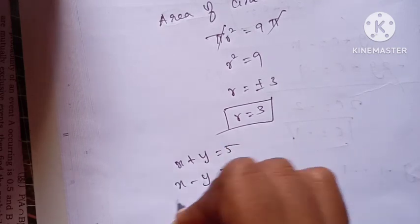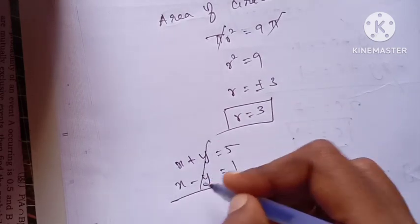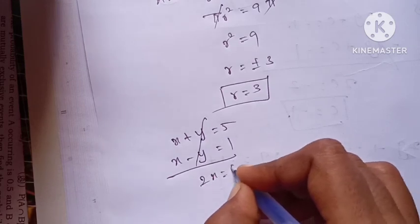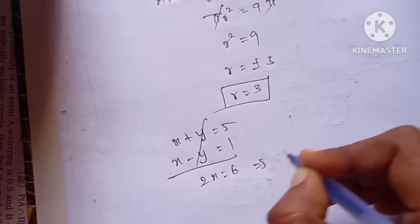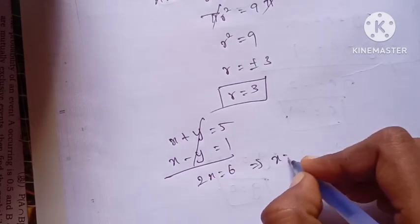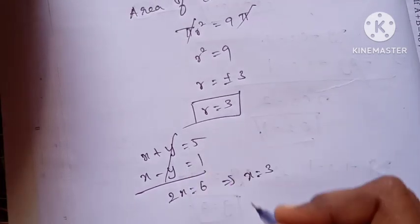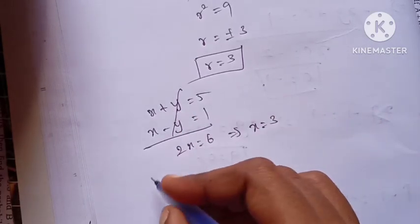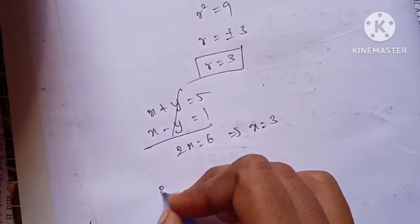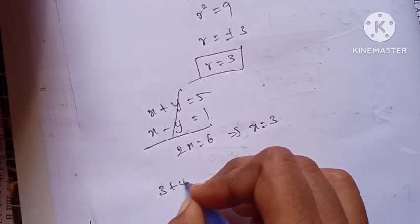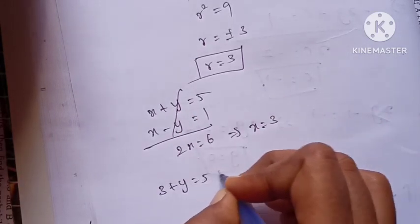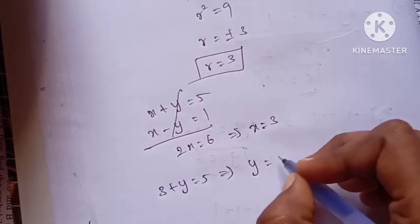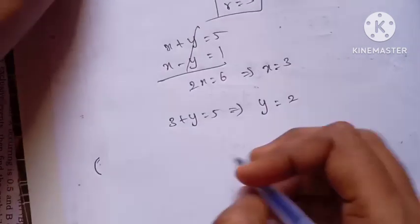Now solving simultaneously: x plus y equals 5 and x minus y equals 1. Adding both equations: 2x equals 6, so x equals 3. Substituting x equals 3 into x plus y equals 5 gives 3 plus y equals 5, so y equals 2.